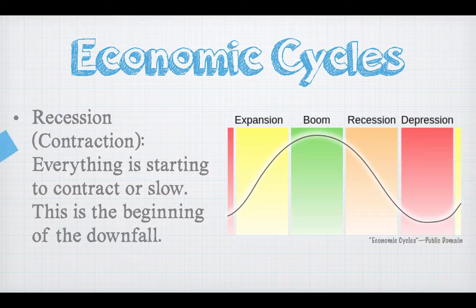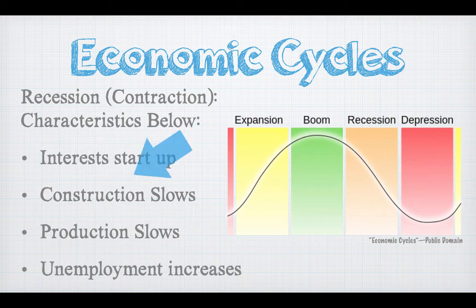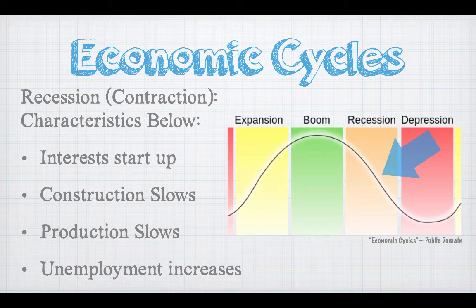The next period is the recession period — that's the downward trend. On our roller coaster, expansion is going up the first hill, boom is cresting over that first hill, and now we're going down — that's the recession part. Everything is starting to slow just ever so slightly; it's the beginning of our downfall. In 2008 we had a big recession, called the Great Recession. They say we never truly got into that depression area.